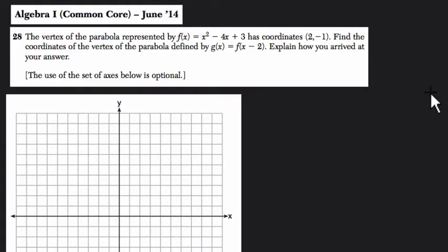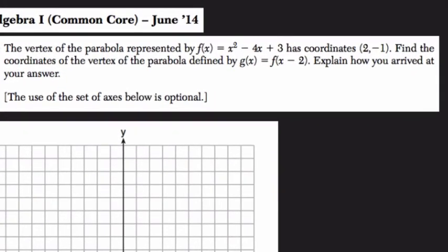Hello and welcome. Before you watch this video, try the problem on your own. In this problem it tells us that the vertex of a parabola represented by f(x) = x² - 4x + 3 has coordinates (2, -1).